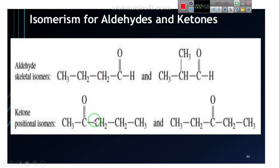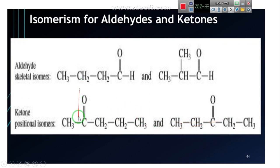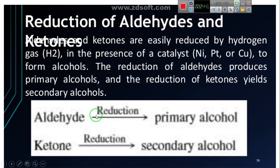For ketones, we talk about positional isomers — the position of the functional group varies. For example, 2-pentanone and 3-pentanone differ only in the position of the C=O group. These are positional isomers. Okay, thank you.